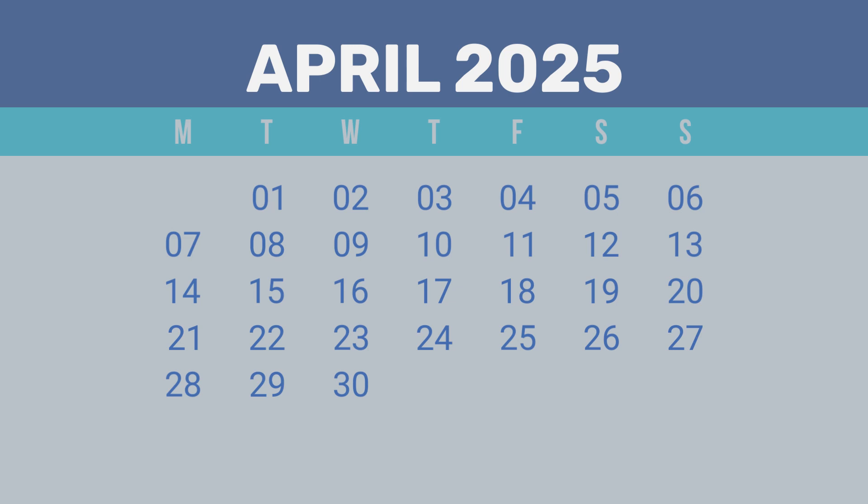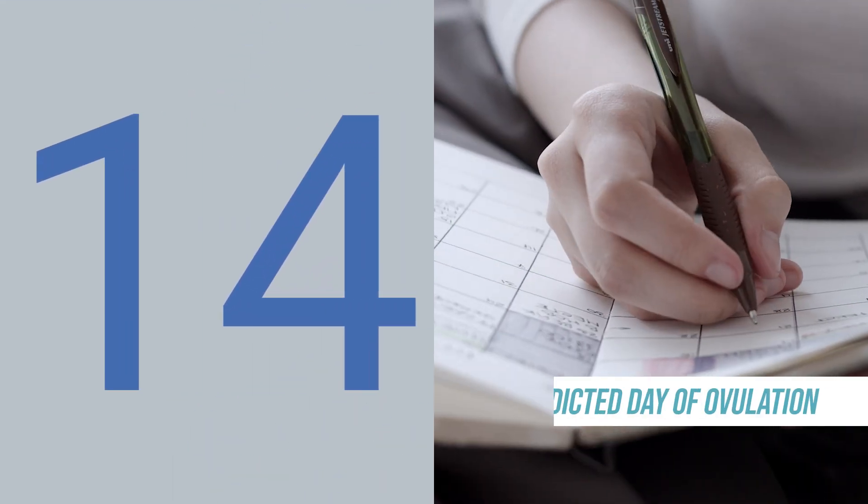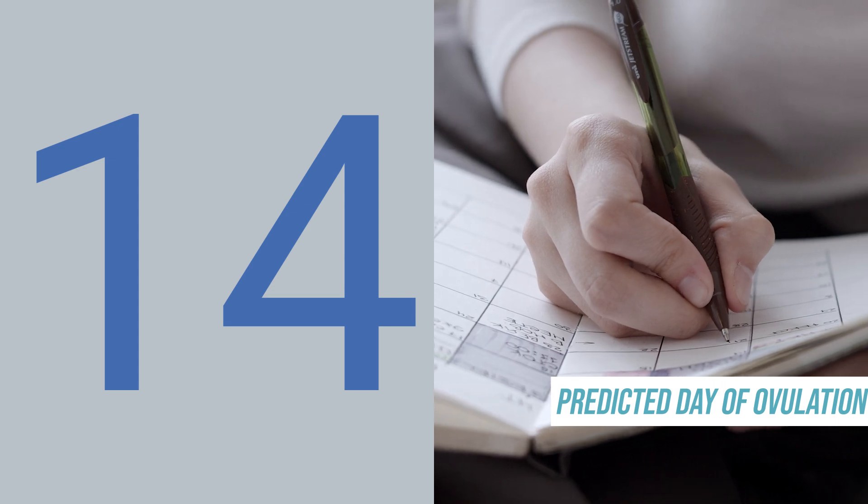Now that we've learned to track our periods and interpret our cycle length, we can predict when we ovulate. For most people with a normal and predictable cycle, you can typically predict ovulation to be 14 days before the start of your next period. Using our example — period starts April 1st, ends April 5th, next period predicted April 28th — subtract 14 days from April 28th and that gives you April 14th as your predicted date of ovulation.